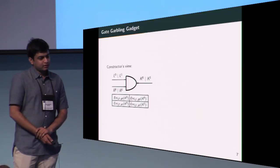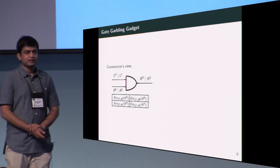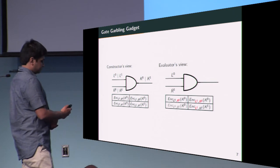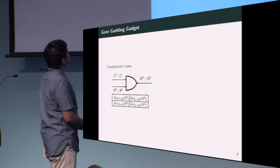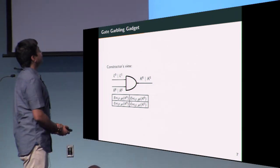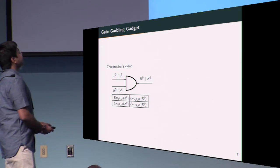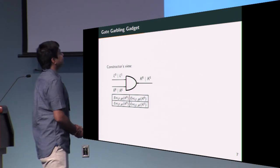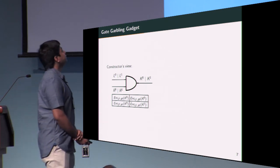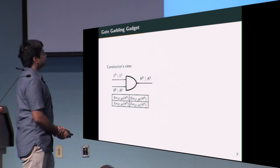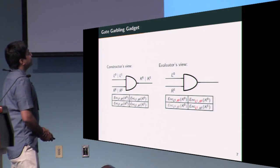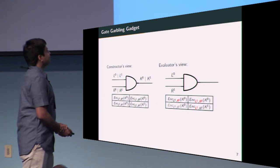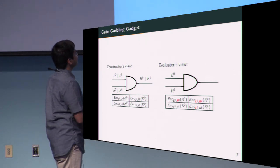Our approach: this is the view of an evaluator and a constructor in a general gate garbling gadget. A gate has two incoming wires, left and right, and an output wire. The left wire has keys L0, L1 corresponding to semantic values 0 and 1, and the gate itself has output keys K0, K1. There are four ciphertexts, each of which use a unique combination of input keys to encrypt the output. The evaluator's view during evaluation is essentially one key on each of the input wires, and this allows them to decrypt any one ciphertext that contains the correct output key.